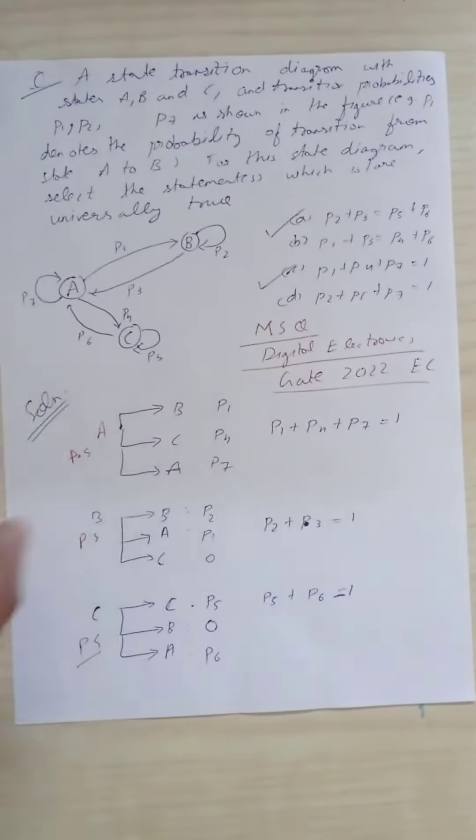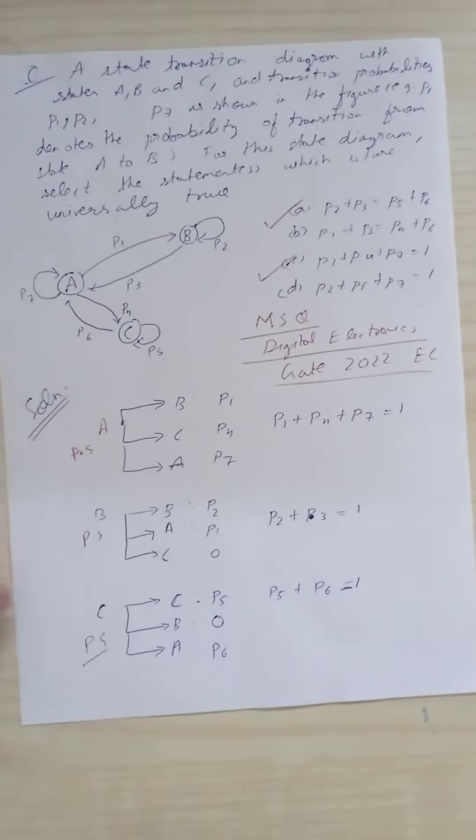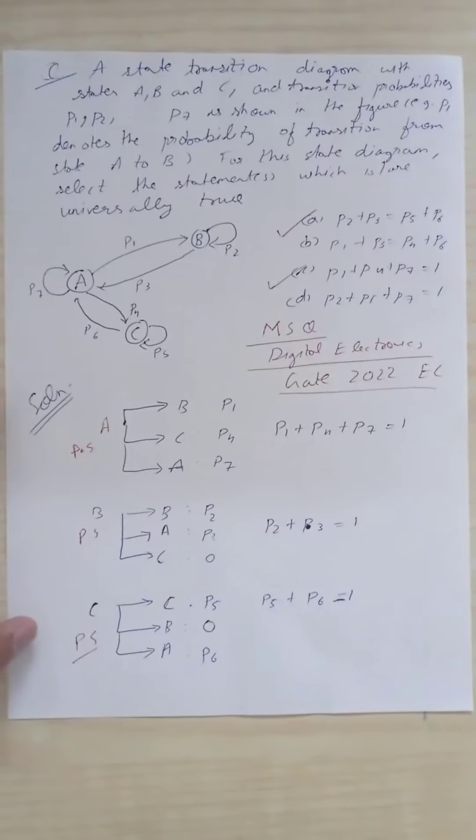A, B, and C are the three states, and the transition probabilities are also given: P1, P2, P3, P4, P5, P6, and P7.